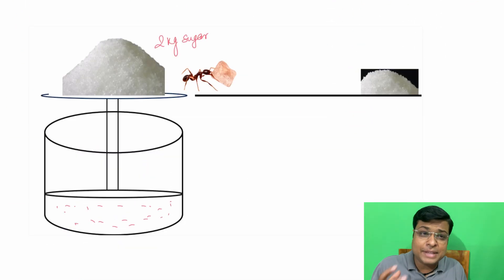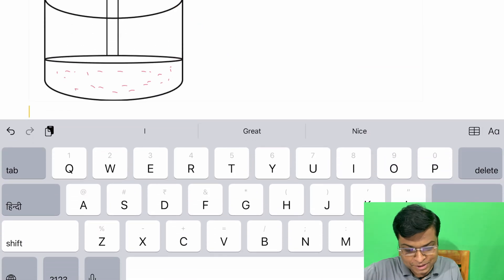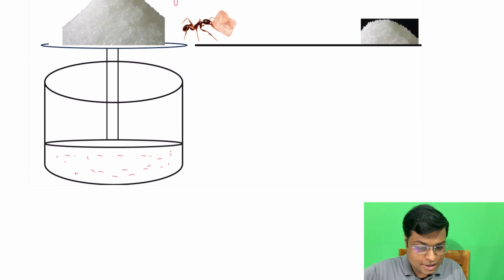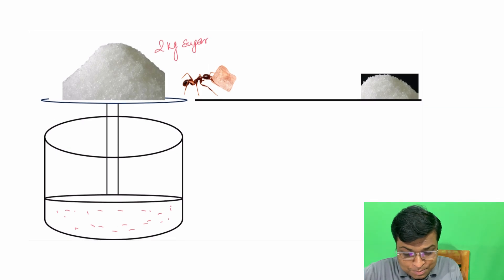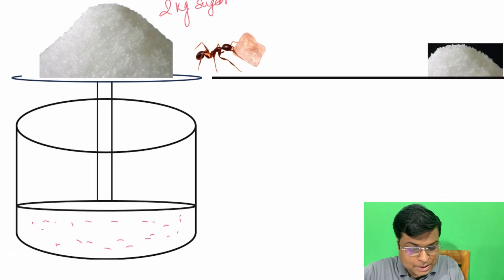Now the same thing is being done by an ant, a small ant you can see here in this figure. Now we know that since ant cannot lift the entire 2 kilograms of sugar in one shot, so what it does?